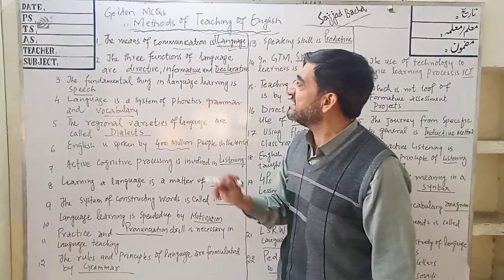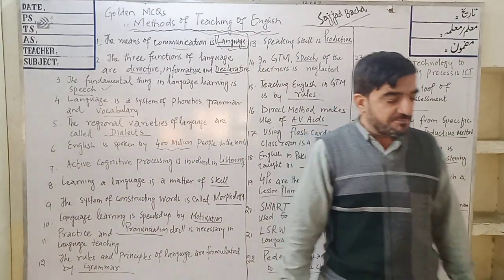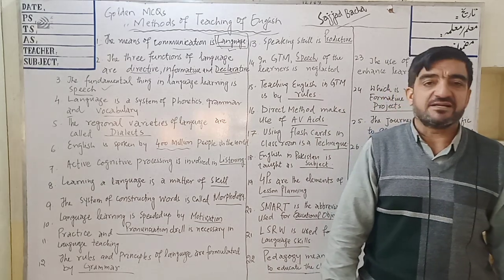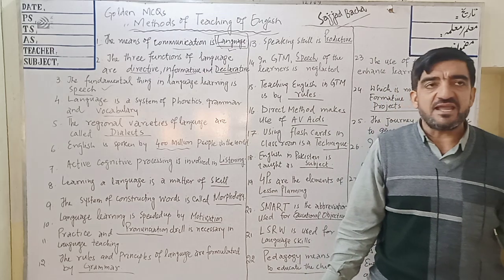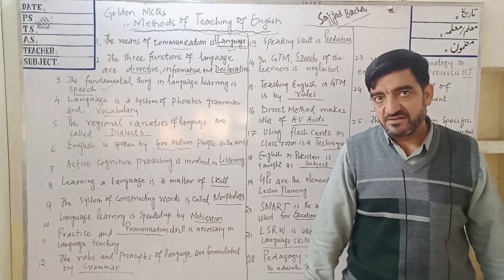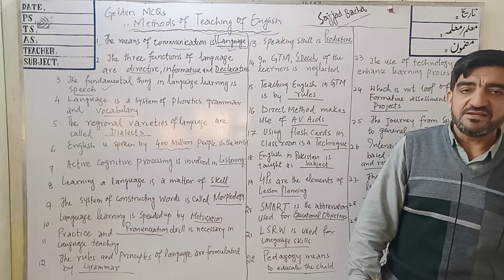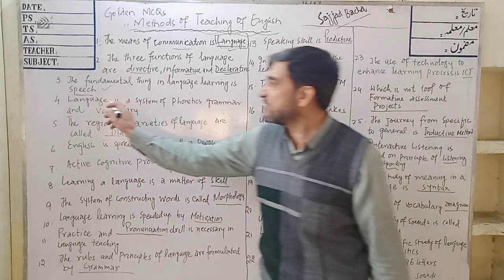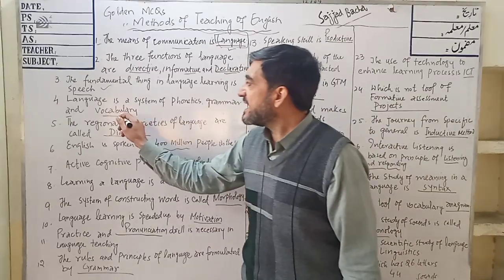MCQ 3: The fundamental thing in language learning is speech. Speech is the fundamental proof of learning. If a person has a lot of knowledge but is unable to express it, that learning is useless. Speech is the fundamental proof of knowledge and information. MCQ 4: Language is a system of phonetics, grammar and vocabulary.